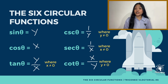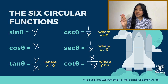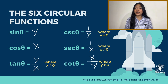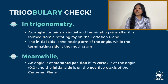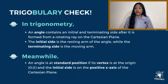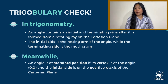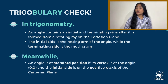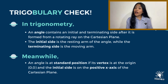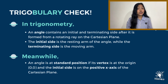Note that the denominators of the tangent, cosecant, secant, and cotangent functions should not be equal to zero. Before we proceed on solving for the six circular functions, let us first have a quick trigobiliary check. In trigonometry, an angle contains an initial and terminating side after it is formed from a rotating ray on the Cartesian plane. The initial side is the resting arm of the angle, while the terminating side is the moving arm. Meanwhile, we define an angle at standard position if its vertex is at the origin and the initial side is on the positive x-axis of the Cartesian plane.